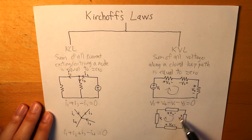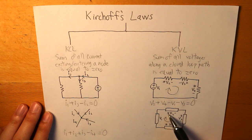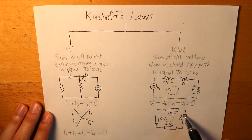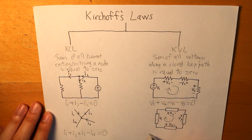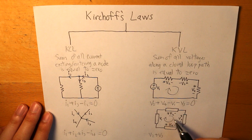And we can determine that all three voltages, well, not this one, but these two are entering through the positive sign. So we have plus V2 and plus V3. And since the path is entering from the negative sign for V4, it is minus V4.